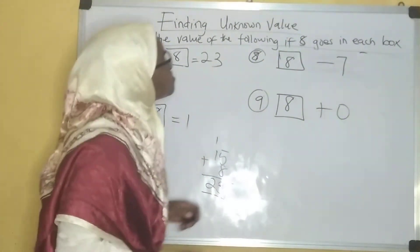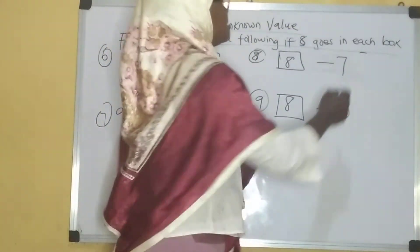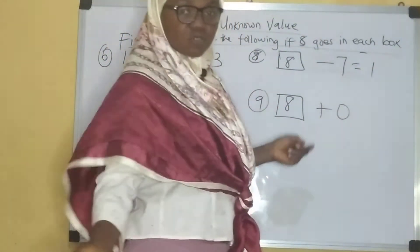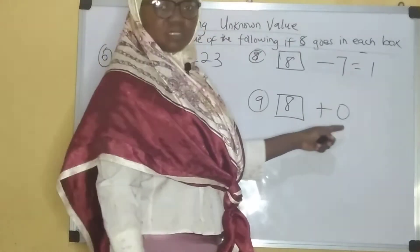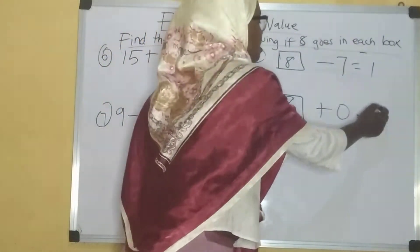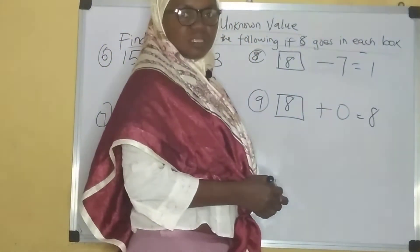Here I have nine minus eight. Nine minus eight will give me one. Here I have eight minus seven. Eight minus seven will give me one as well. Here I have eight plus zero. Eight plus zero gives me eight.